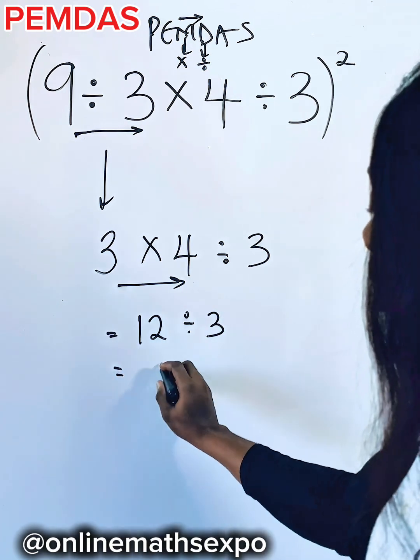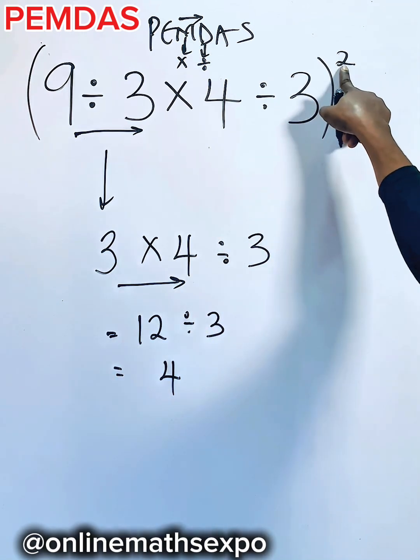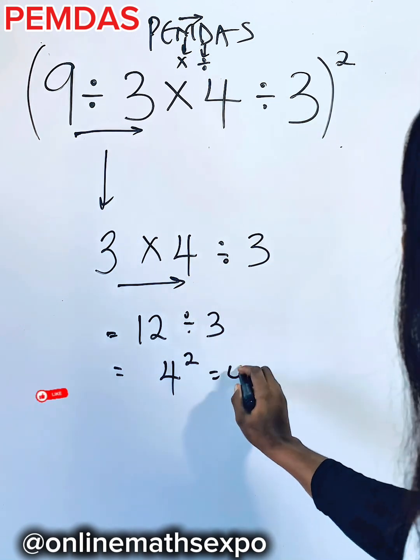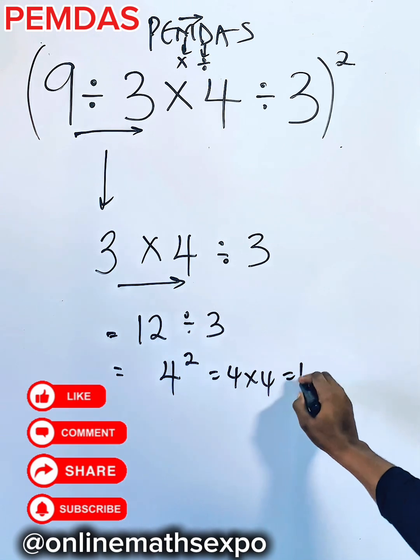And when you divide 12 by 3, it gives you 4. Remember this exponent. So you are going to raise it to the power of 2. And that will give you 4 times 4, which is 16.